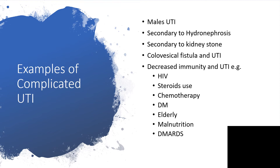People using steroids will experience immunosuppression, and chemotherapy leads to bone marrow suppression and immunosuppression. Diabetes mellitus is also known for its immunosuppressive effects. Elderly people — particularly the malnourished ones — have lower immunity the older they are.